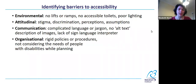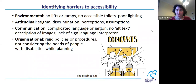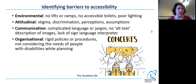Organizational barriers include rigid policies or procedures that don't account for people with differences, and not considering the needs of people with disabilities while planning. From Disabled Life, there's a comic where two people in wheelchairs are sitting in the disabled section at a concert — which is behind all the people standing, so they can't see the stage.